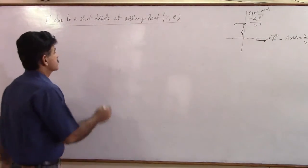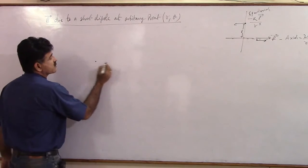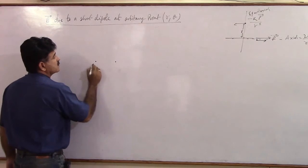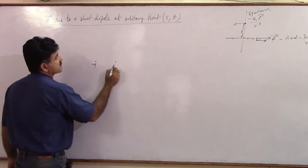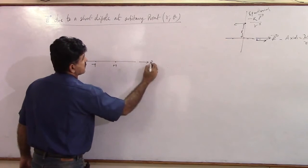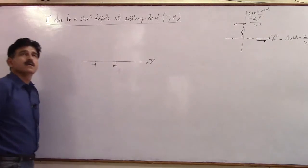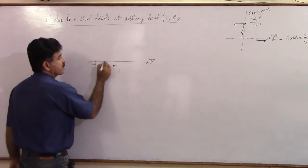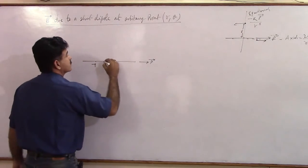Now today our job is to do this. This is my short dipole. Let us say minus Q, plus Q. This dipole moment is directed in this direction. Let us say this is the dipole moment. Then the center is O, and there is an arbitrary point here located.